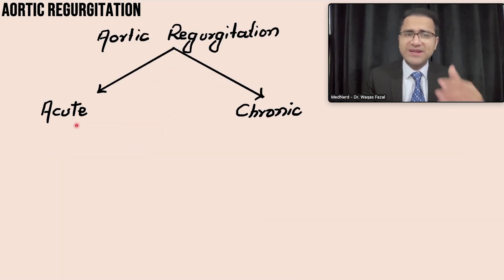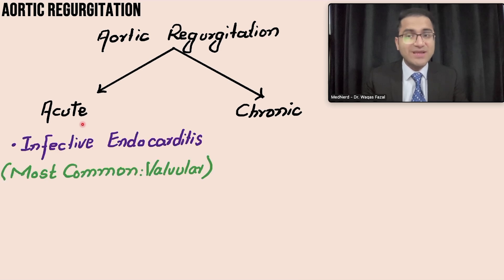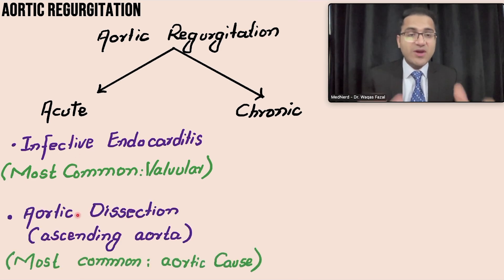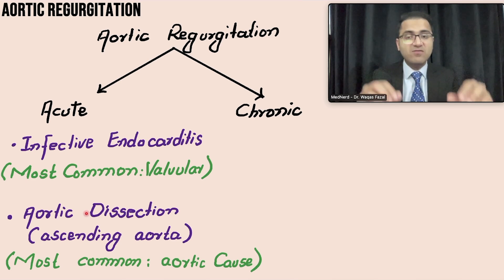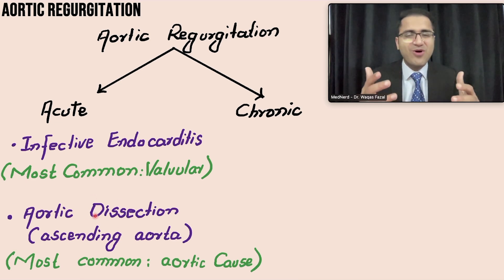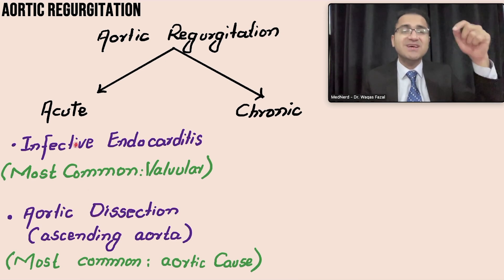Aortic regurgitation can be acute, happening suddenly. In acute cases, the patient presents with a decrescendo diastolic murmur and may also have fever in cases of infective endocarditis — the most common valvular cause, where the aortic valve is damaged. Aortic dissection is the most common aortic cause: a false lumen forms in the ascending aorta, damaging the aortic valve and resulting in aortic regurgitation. Full videos on aortic dissection and infective endocarditis are linked in the description.